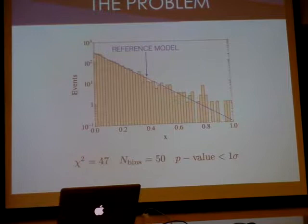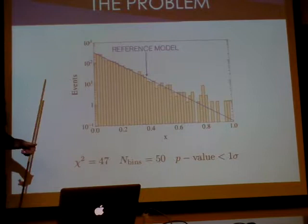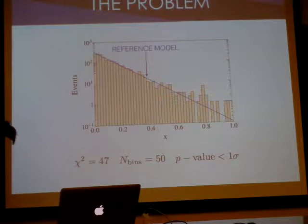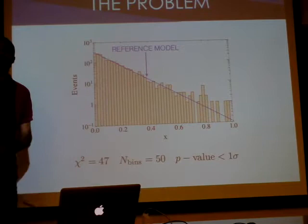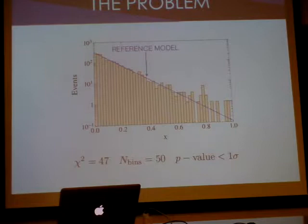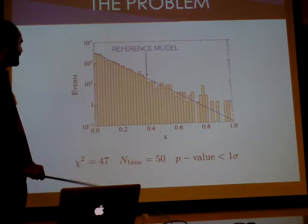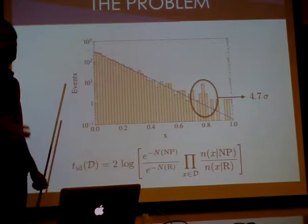You would like to know if there is any statistically significant discrepancy in this dataset. Right now, the only model-independent way to do this is to bin these events and do a simple chi-square comparison with your reference model. If you do this in this very simple setup, you get chi-square of 47 over 50 bins, meaning the data exactly follows the reference model — less than one sigma significance for any discrepancy.